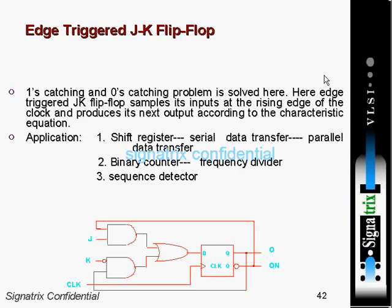Now we'll see edge-triggered JK flip-flop. The one-sketching and zero-sketching problem is solved here. The edge-triggered JK flip-flop samples its input at the rising edge of the clock and produces its next output according to the characteristic equation.